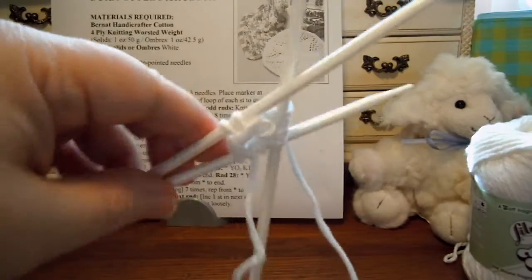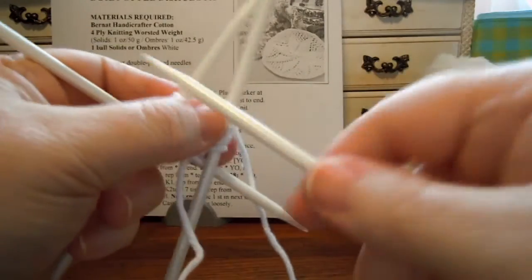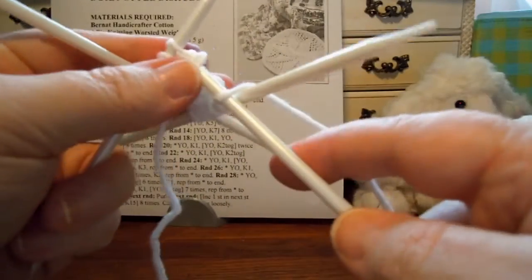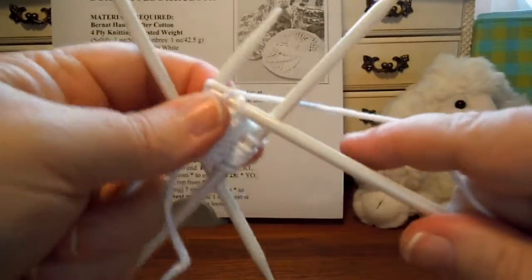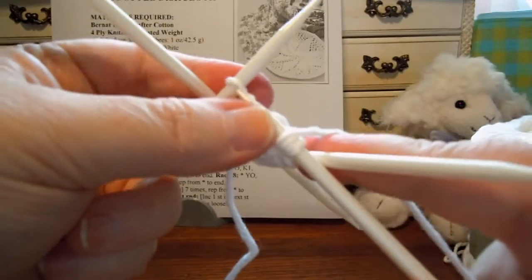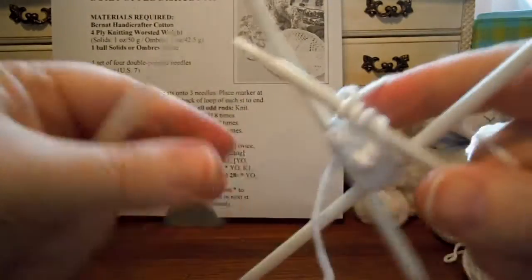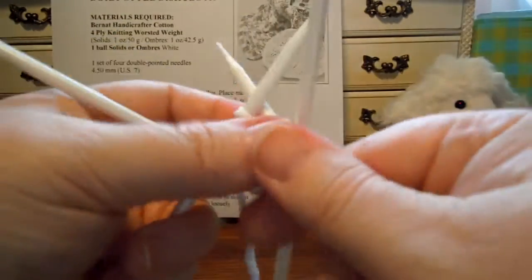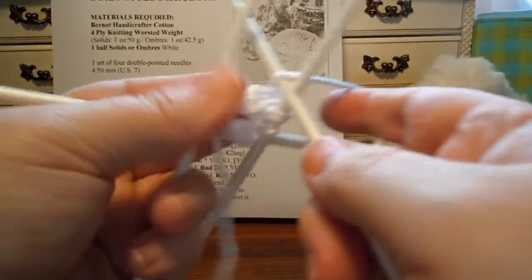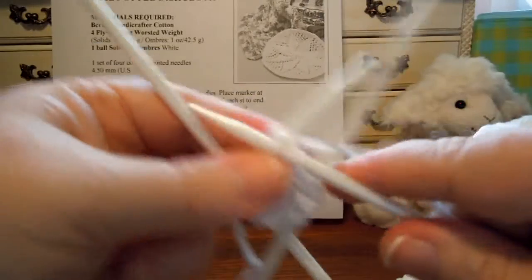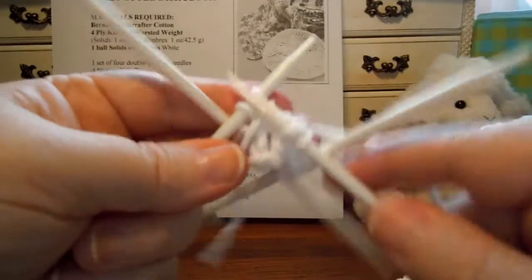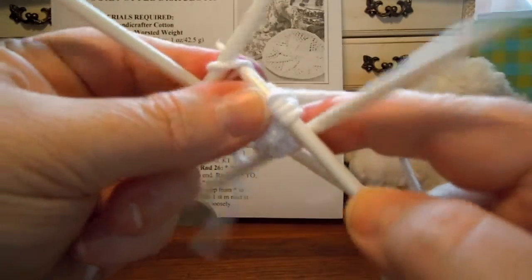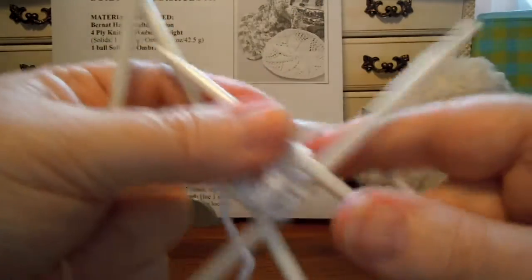Now we're ready for the next needle. And once again, we're just going to be setting the needle there. Just put the needle there. Yarn over, knit one. Yarn over, knit one. I'm ready for the last needle. Set the needle there. Yarn over, knit one. Yarn over, knit one. And we're done. So that was all of round two.